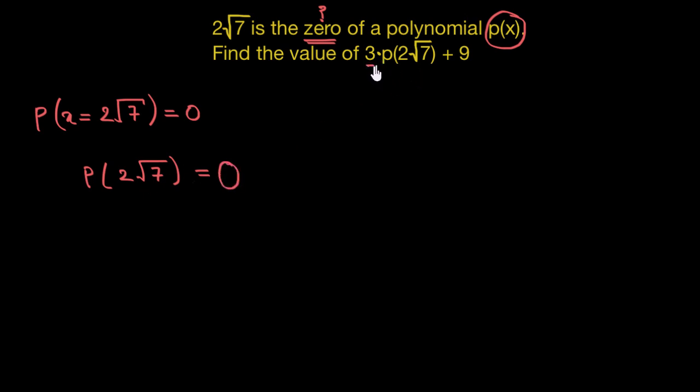So for this given expression, p(2√7) would be equal to zero because 2√7 is the zero of this given polynomial.